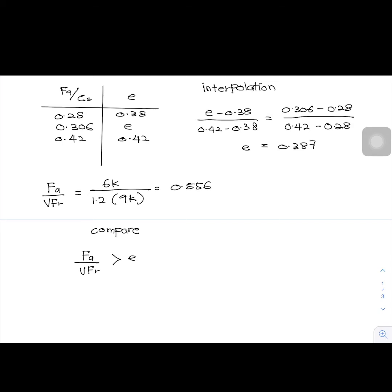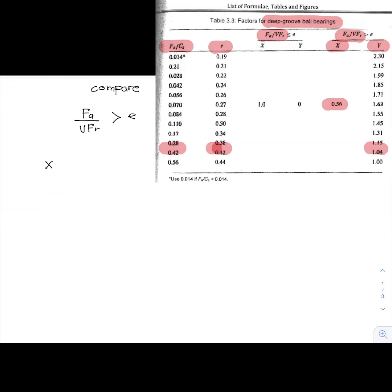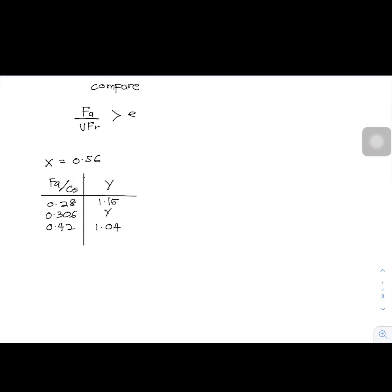Then, refer to table 3.3. We have to use the right column of X and Y. For the value of X, we can just take the value of 0.56. But for the value of Y, we have to use interpolation, since the value of Y is in between 1.15 and 1.04. So, after interpolation, the value of Y is 1.13.